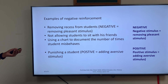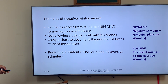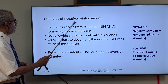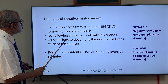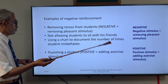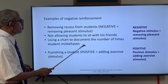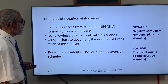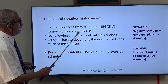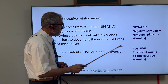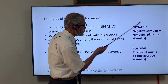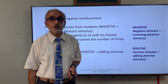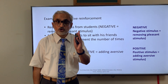An example of negative reinforcement is removing a pleasant stimulus — for instance, not allowing a student to sit with his friends, or using a chart to document the number of times a student misbehaves. This is a negative reinforcer because something pleasant is being taken away in order to stop an undesired behavior in the student.